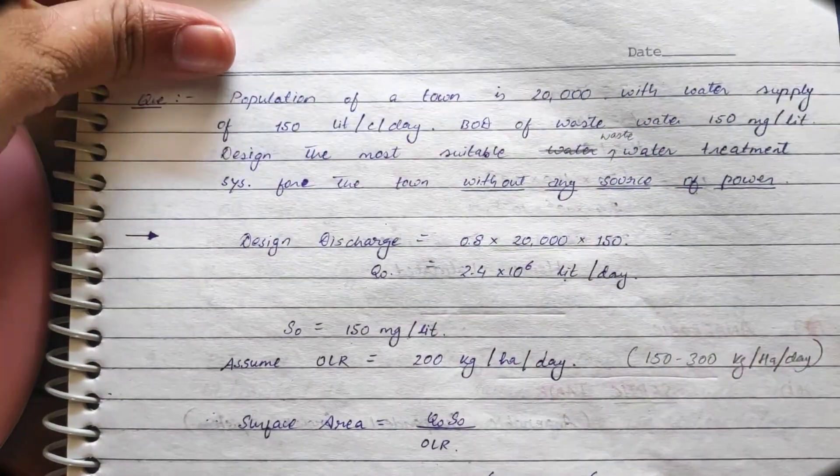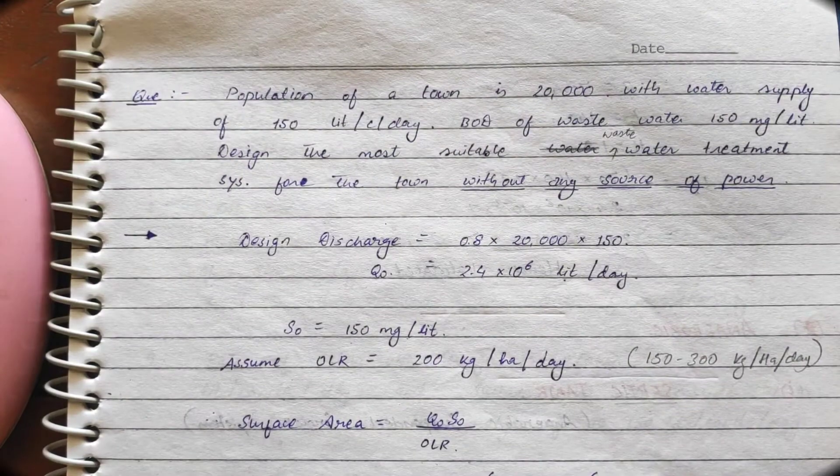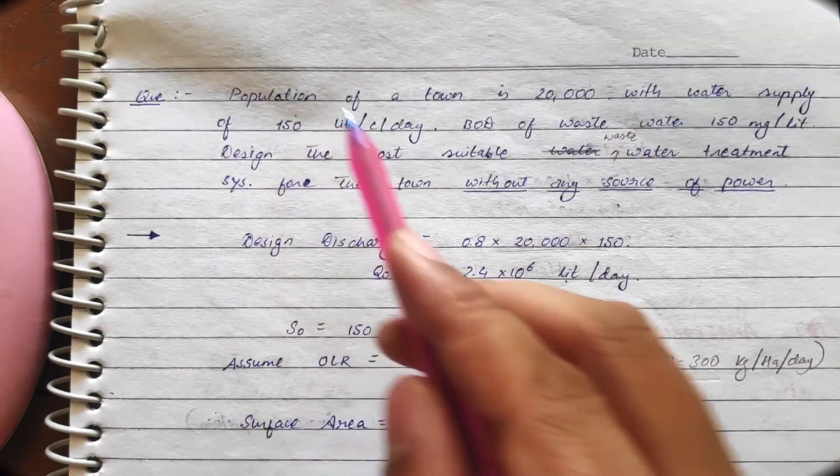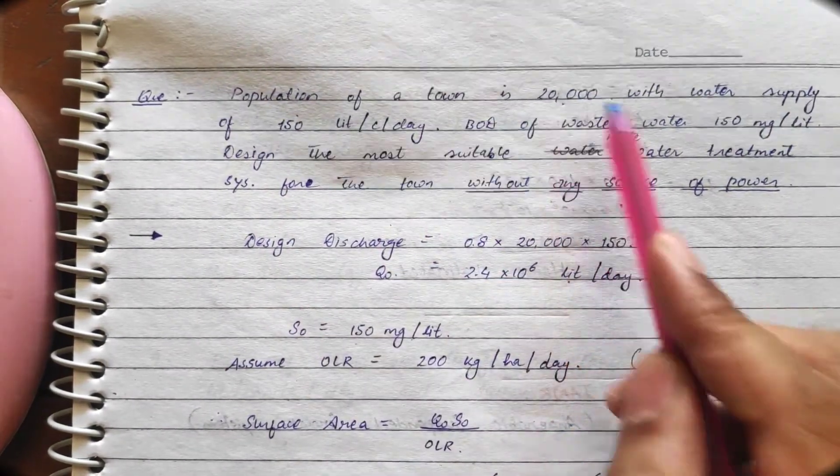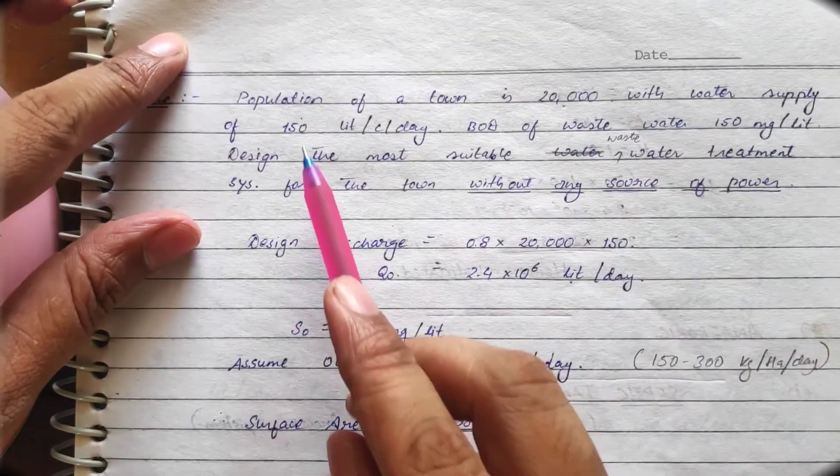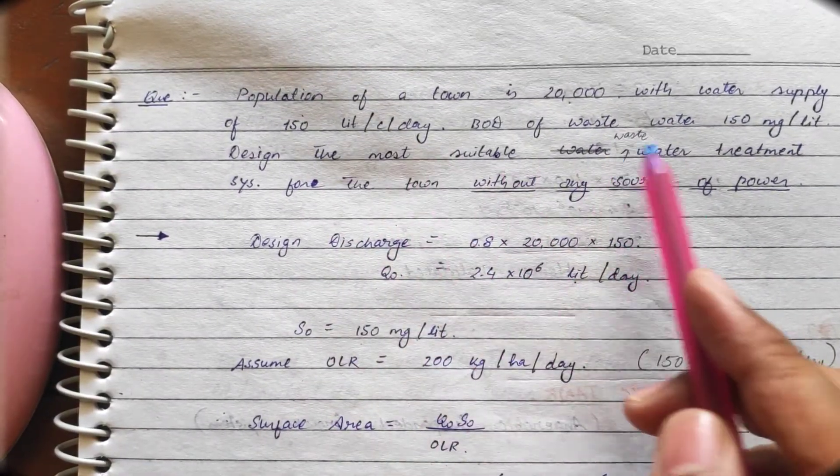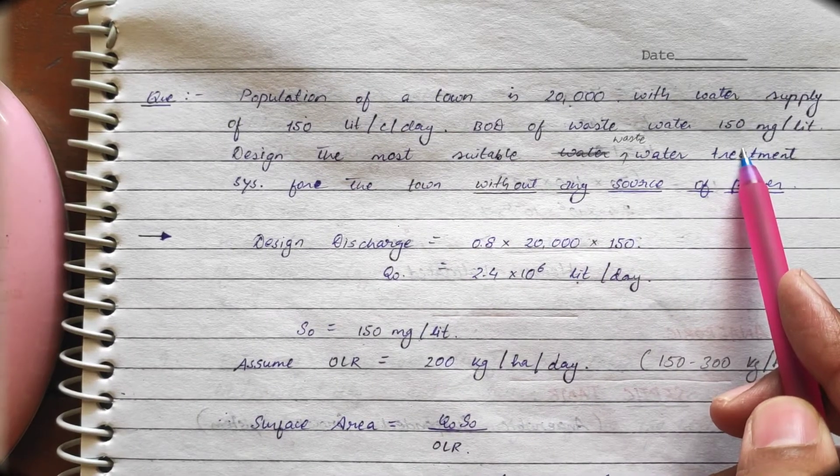Next we are going to see the numericals on oxidation pond. First, population of a town is 20,000 with water supply of 150 liters per capita per day. BOD of wastewater is given 150 mg per liter.